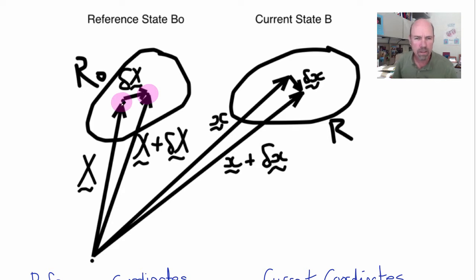As before, we'll consider a point in the reference state with position vector capital X, but now we'll also consider a point that's a small distance, delta big X away, and we'll imagine what happens to this vector as the material moves and deforms, so that delta big X in the reference state becomes delta little x in the current state of the body.